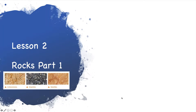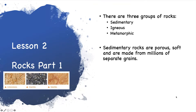There are three groups of rocks: sedimentary, igneous, and metamorphic. Sedimentary rocks are made up from millions of tiny grains which are compacted and cemented together. You can see these grains if you look at the rock with a magnifying glass. Looking at the picture of limestone, you can see the individual grains that make up its structure. These grains make the rock porous, meaning it can absorb water and air.